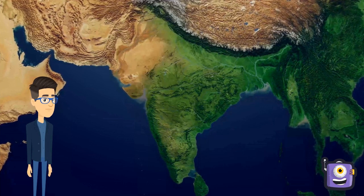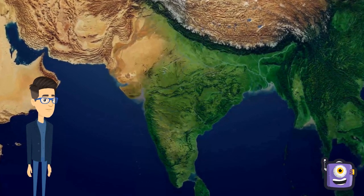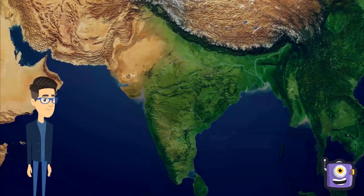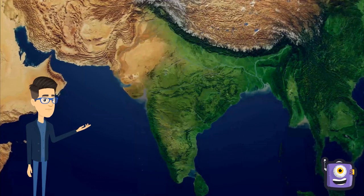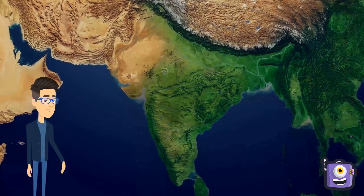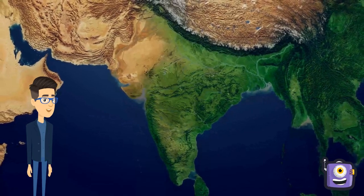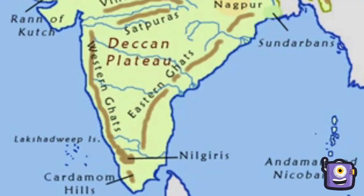The Deccan Plateau is the oldest tableland of the South Indian peninsula. It was once a part of Gondwana land, and owing to repeated geological pressures, this part broke off from the main mass of Gondwana land. The name Deccan comes from the Sanskrit word Dakshan, which means 'the south.' The plateau lies south of the Vindhya range, which separates it from the northern plains. It is shaped like a triangle, bounded on the east and west by mountain ranges known as the Eastern and Western Ghats.